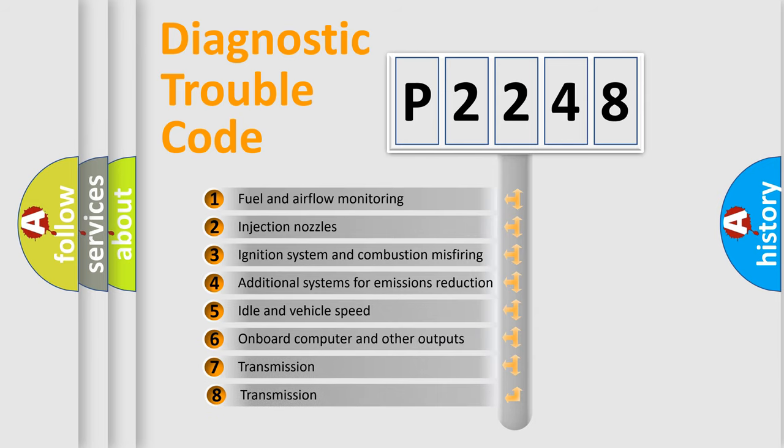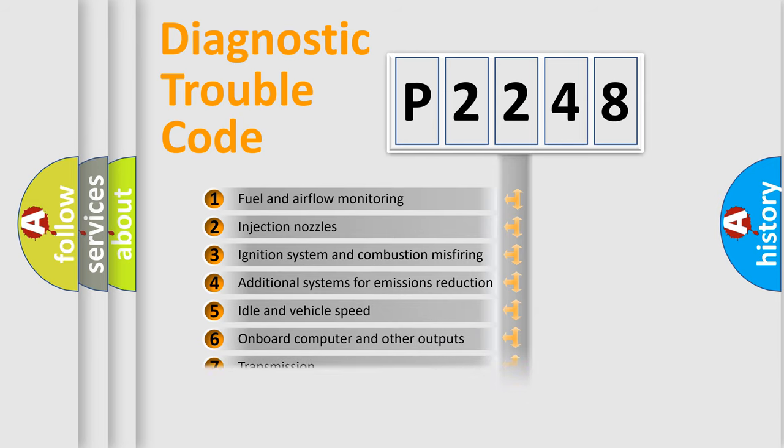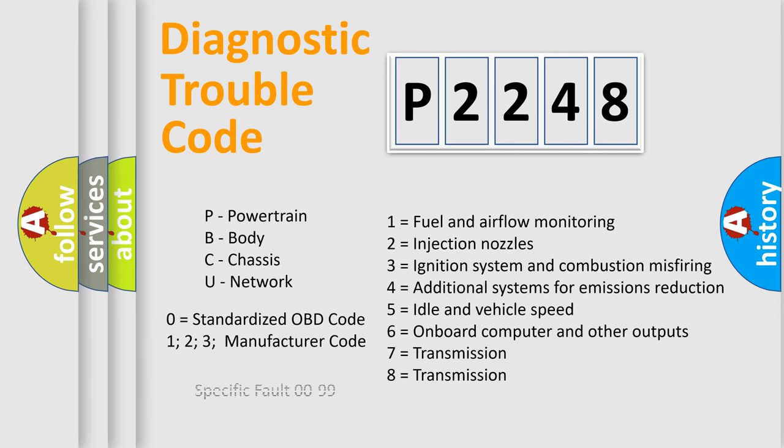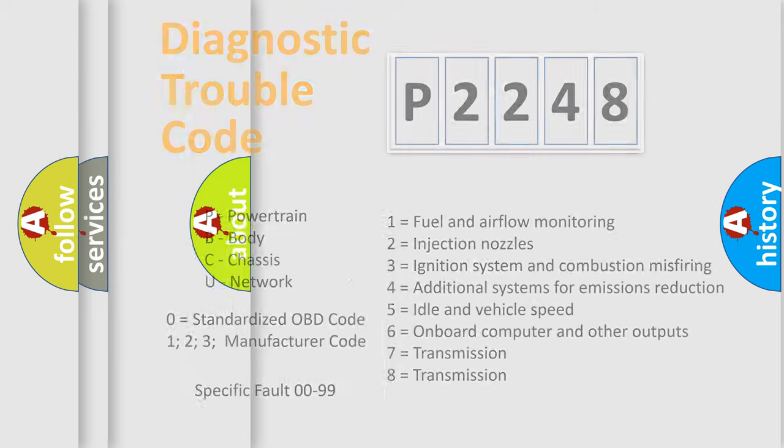The third character specifies a subset of errors. The distribution shown is valid only for the standardized DTC code. Only the last two characters define the specific fault of the group. Let's not forget that such a division is valid only if the second character code is expressed by the number zero.